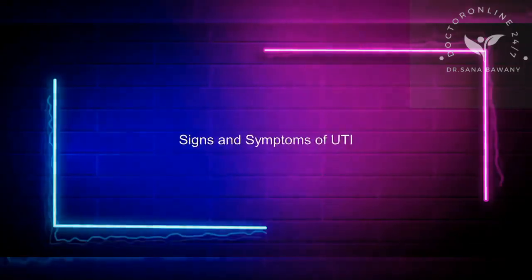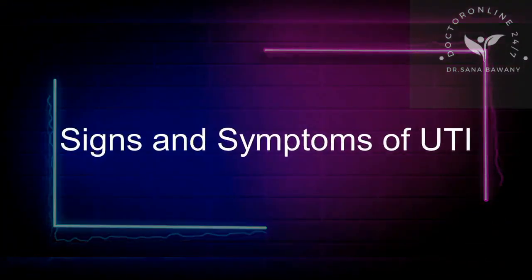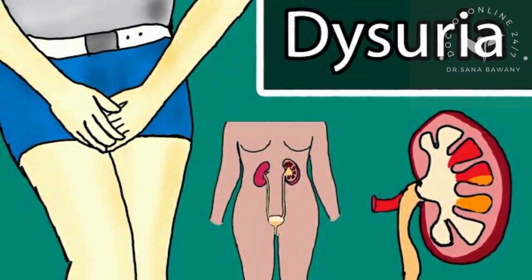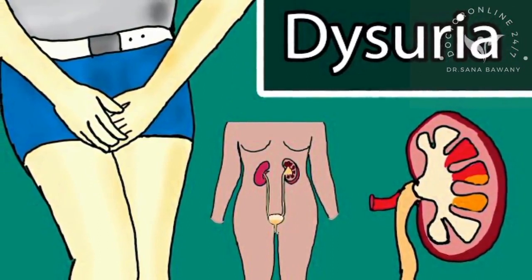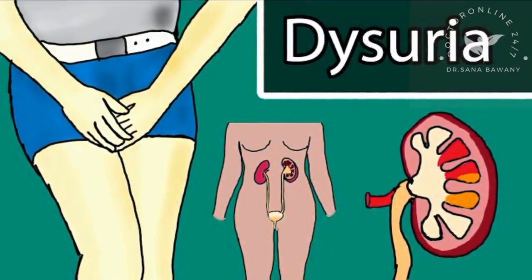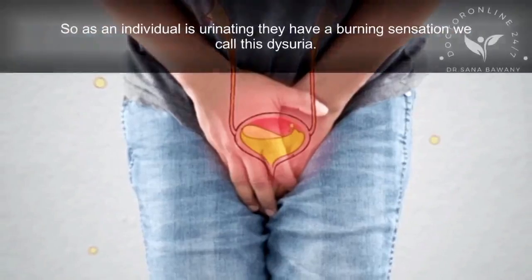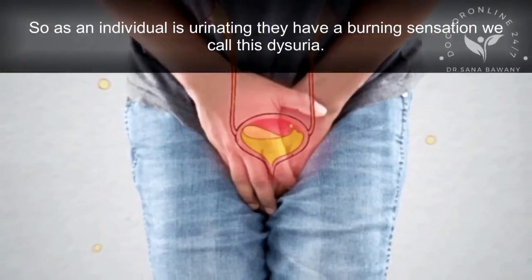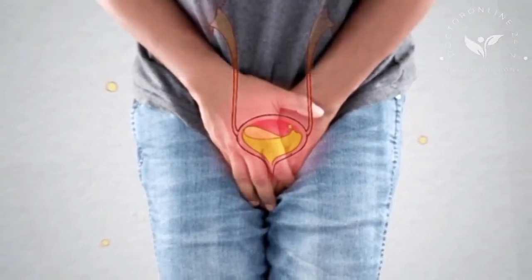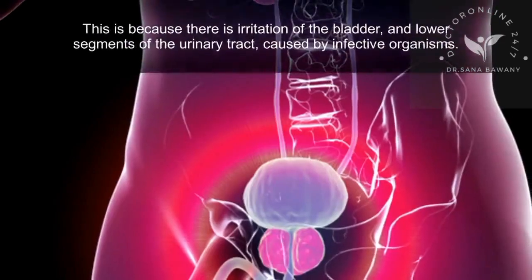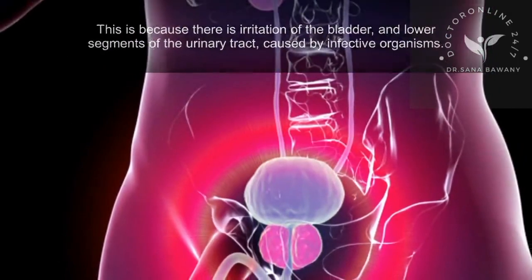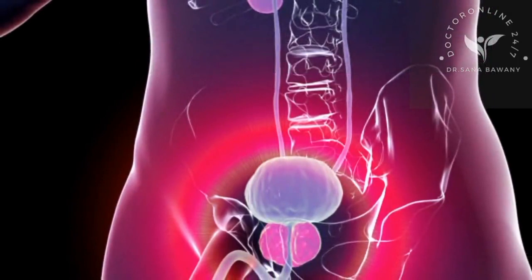One of the signs and symptoms of UTI is dysuria — a sensation of pain described as a burning sensation while urinating. As an individual is urinating, they experience this burning sensation. This is because there is irritation of the bladder and lower segments of the urinary tract caused by infective organisms.